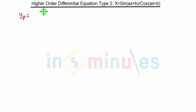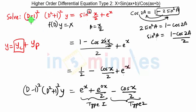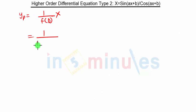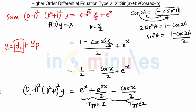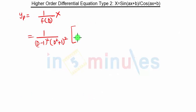After finding the complementary function, we need to find yp. yp is nothing but 1/f(D) · X, where f(D) is (D−1)² · (D²+1)². Now, what is X in our problem?